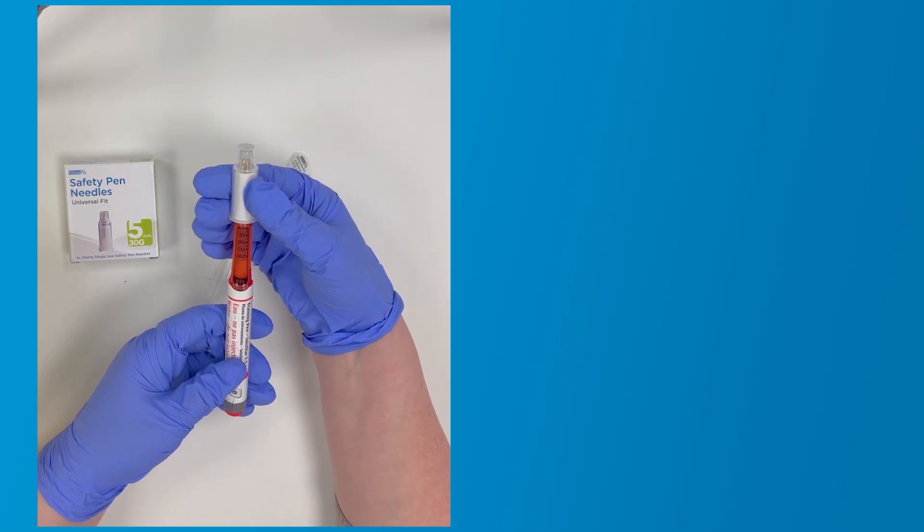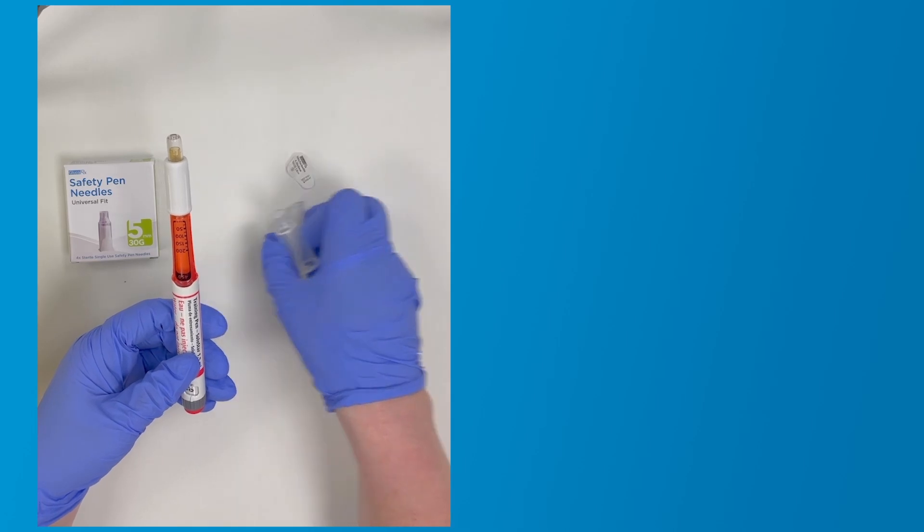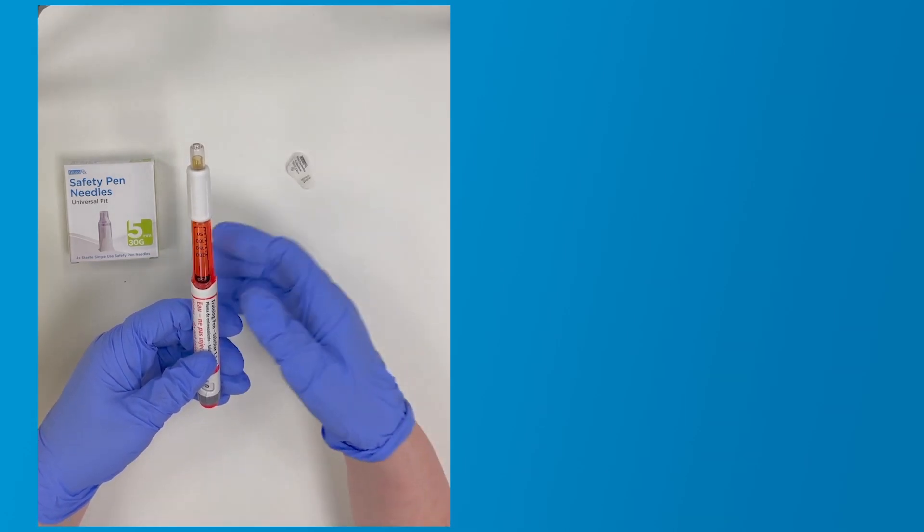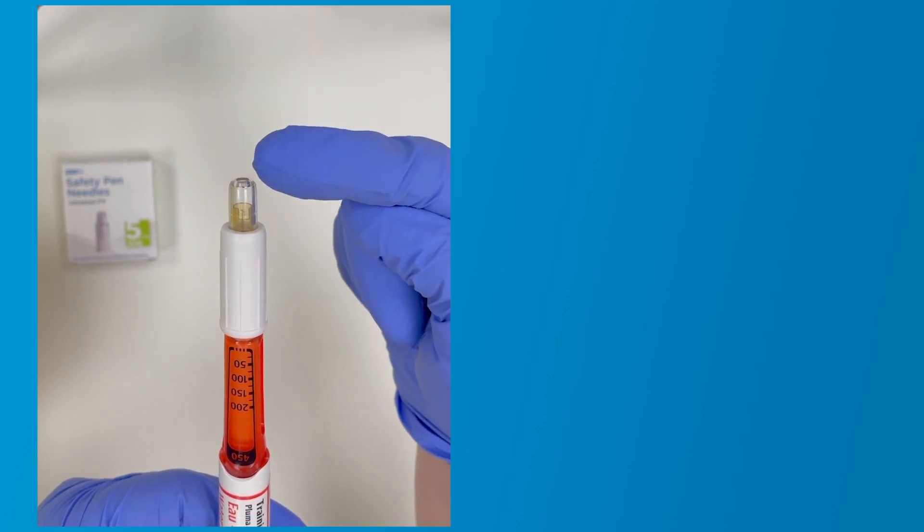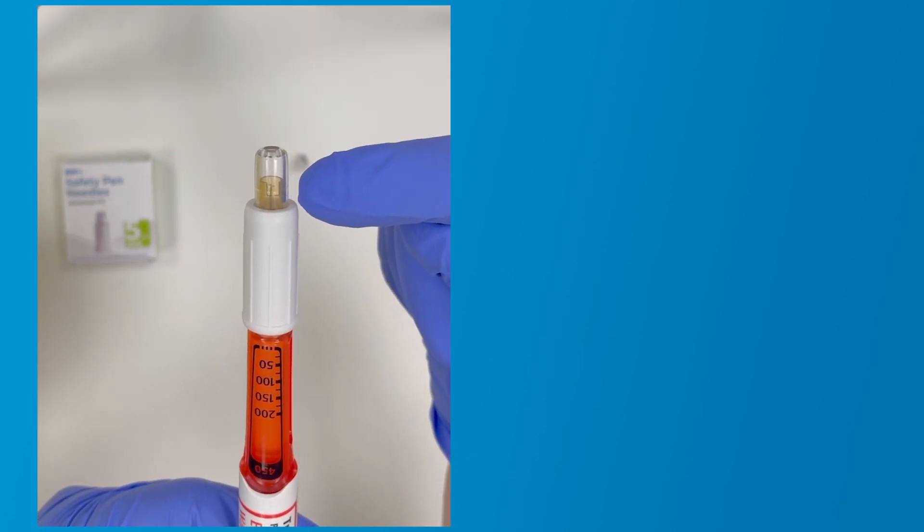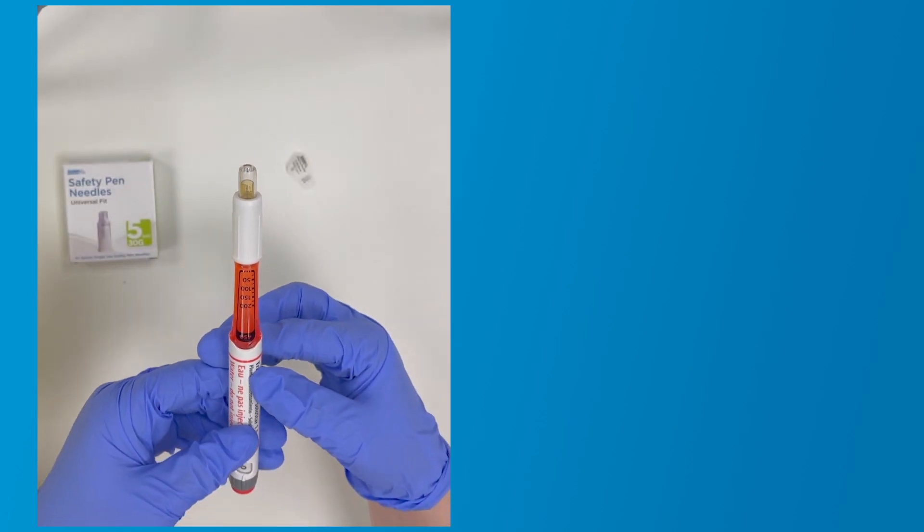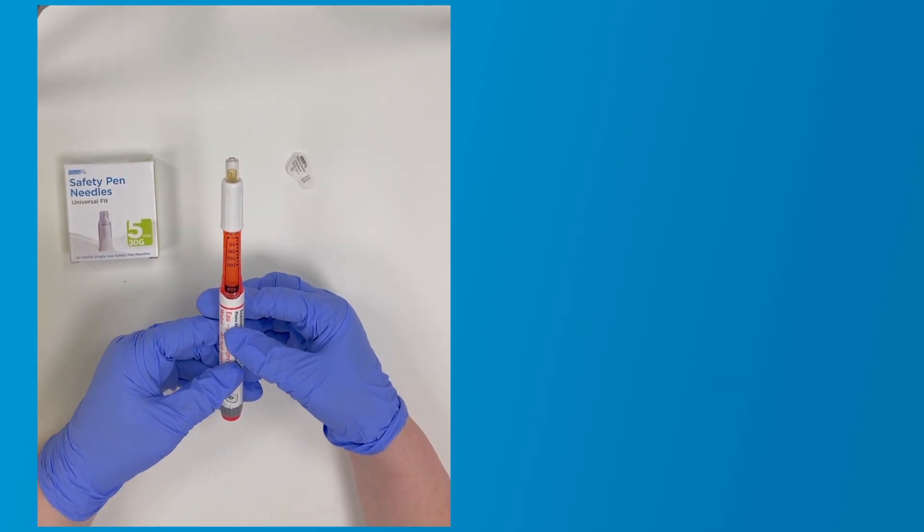Next, pull off the outer cover. You will notice three separate parts of the safety needle: the white body, the inner clear shield, and the yellow or blue collar. The yellow or blue inner collar indicates the needle has not been used.